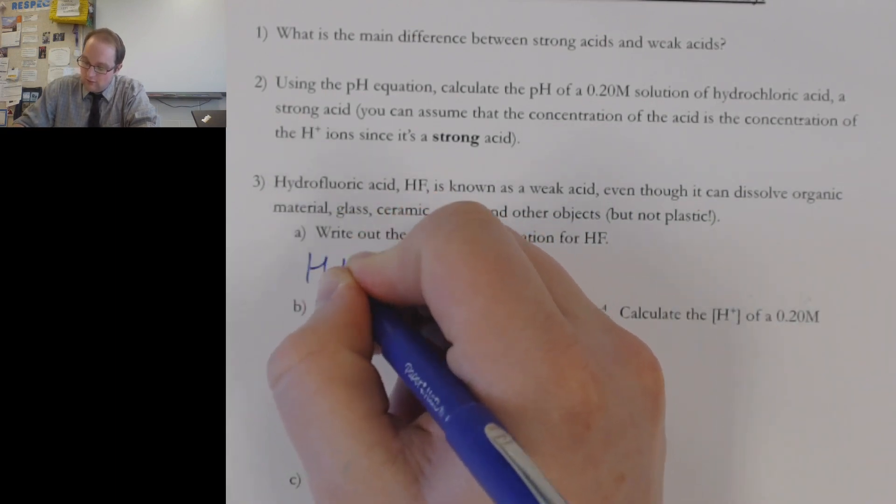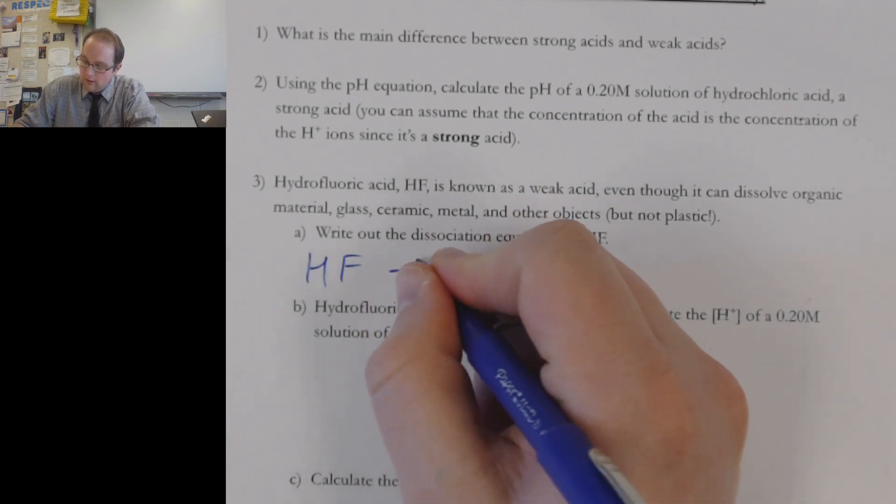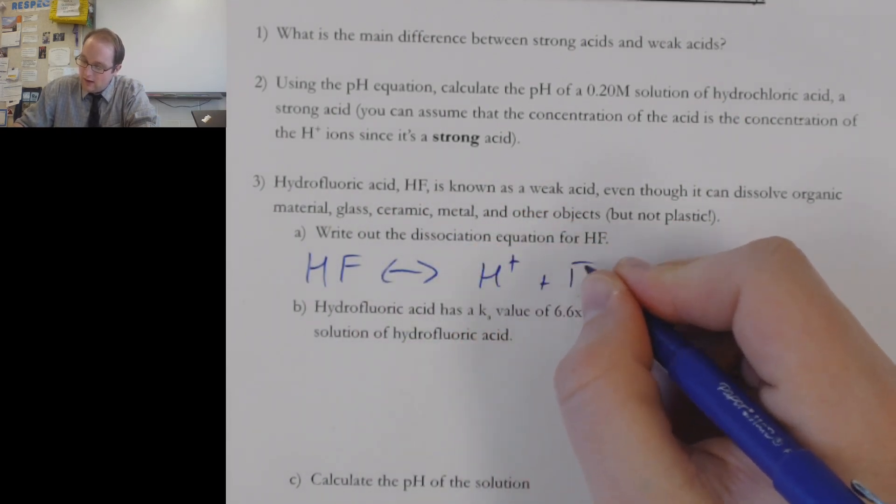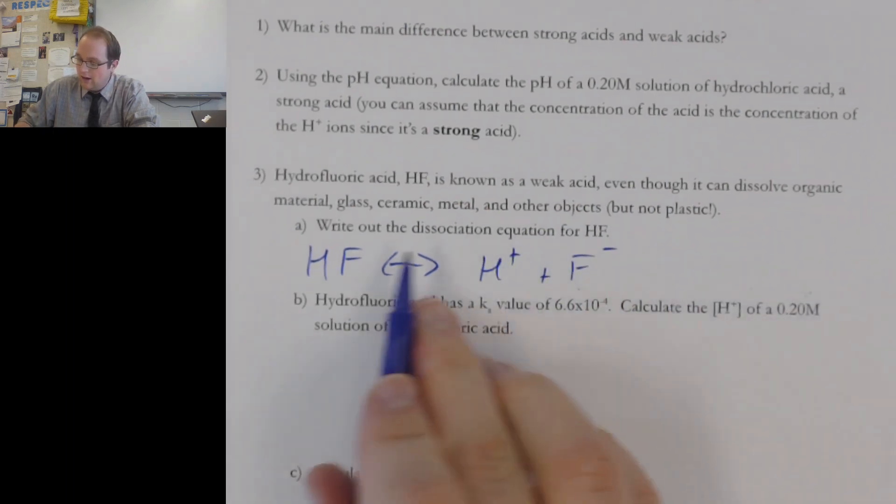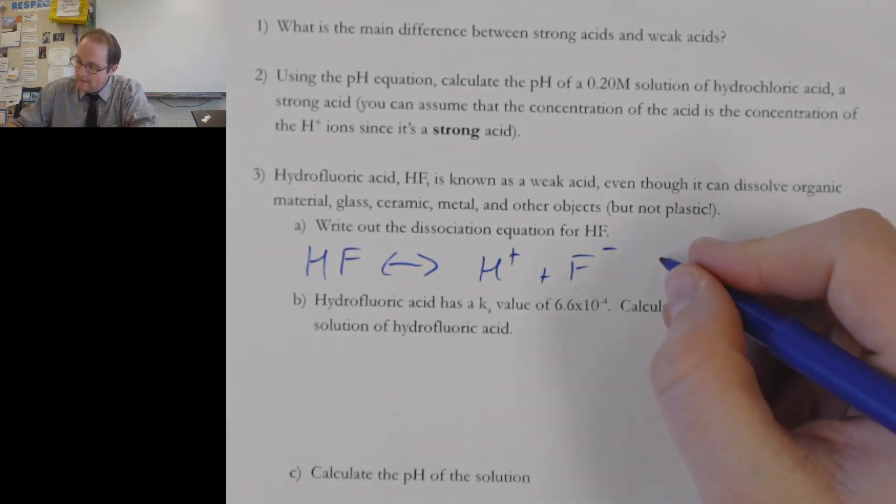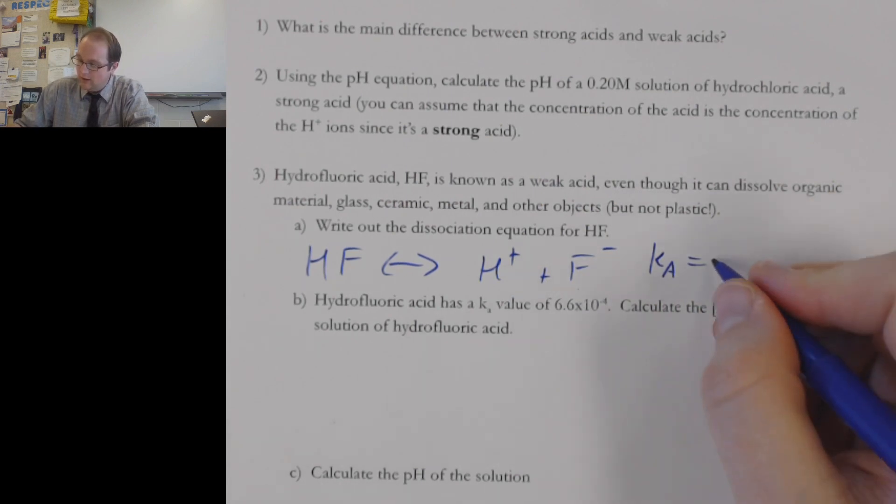Remember, we're talking about dissociation. We're talking about things breaking apart. So I'm going to be showing that I'm going to be making that H plus ion plus an F minus ion. And I'm going to use this equation here to help me set up and write out my Ka expression